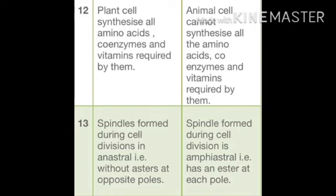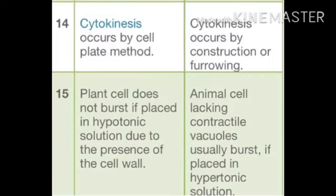In plant cells, spindles formed during cell division are anastral, i.e., without asters at the opposite pole. In animal cells, spindles formed during cell division are amphiastral, i.e., having an aster at each pole. Cytokinesis in plant cells occurs by the cell plate method; cytokinesis in animal cells occurs by constriction or furrowing.